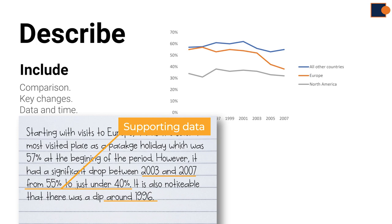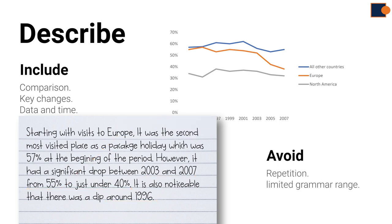So always make sure to give some support for your description or comments. But when you are writing an essay, you must avoid repetition. So in this example, all the linking words, verbs, nouns are not repeated. The second thing is you should try to write a wide range, which means grammar range. Here in the example, a mix of complex and simple sentences are used. 'It was the second most visited place' is the main clause. 'Which was 57%' is a dependent clause. 'It had a significant drop' is a simple sentence, as there is no dependent clause.